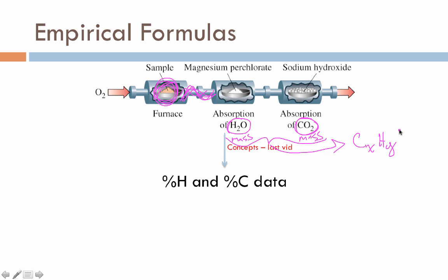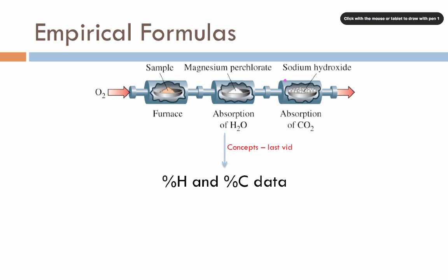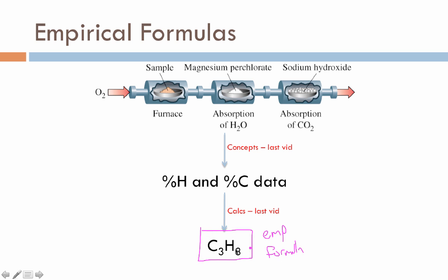So those are concepts that were covered in our previous video. So that information ultimately leads us to percent carbon data and percent hydrogen data. And then ultimately those calculations then allowed us to calculate the percentages and come up with what we would describe as an empirical formula. It is the simplest whole number ratio. In this case, it's a 3 to 8 ratio of carbon atoms to hydrogen atoms. If any of this stuff doesn't seem obvious to you, if any of this stuff seems a little bit murky, please go back to the empirical formula video. It will cover all of these concepts in much more detail, hopefully get you back up to speed and ready for what we're about to talk about next.